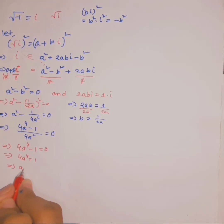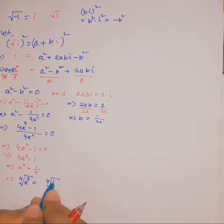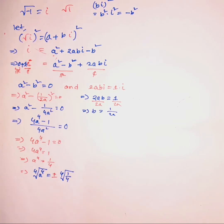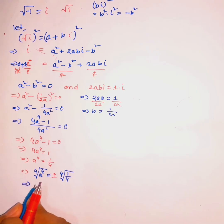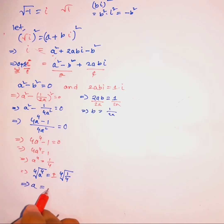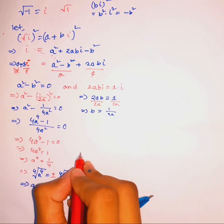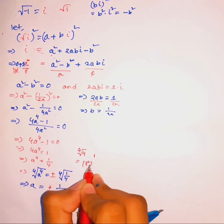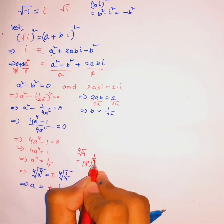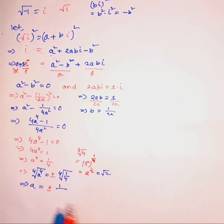Divide both sides by 4: a to the 4th equals 1 over 4. Now take the fourth root of both sides. When we take an even-numbered root we include plus or minus, so a equals plus or minus the fourth root of (1 over 4). The fourth root of 4 equals the fourth root of 2 squared, which is 2 to the 1/2, i.e., square root of 2. So a equals plus or minus 1 over square root of 2.